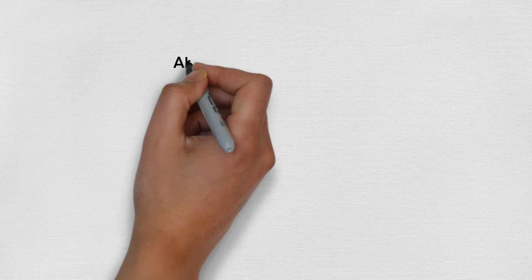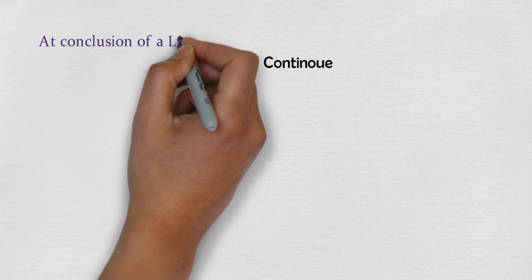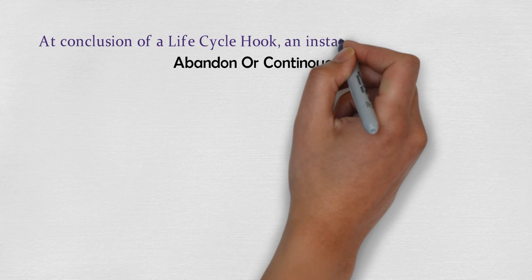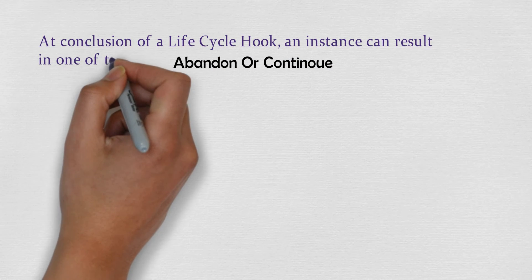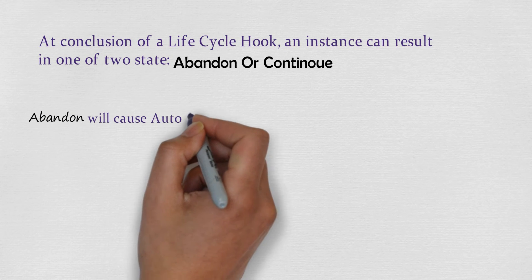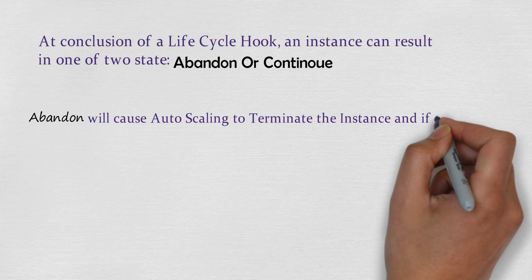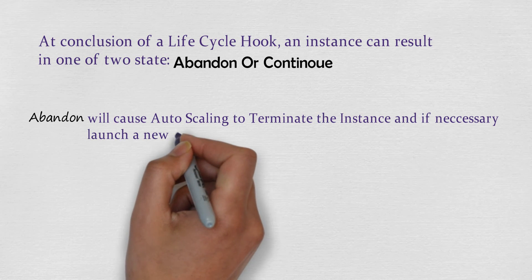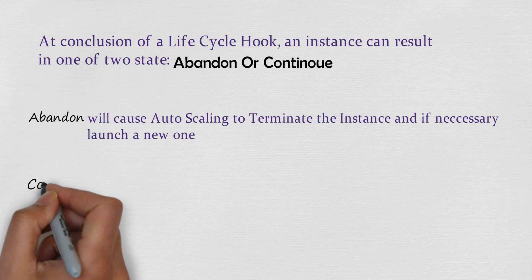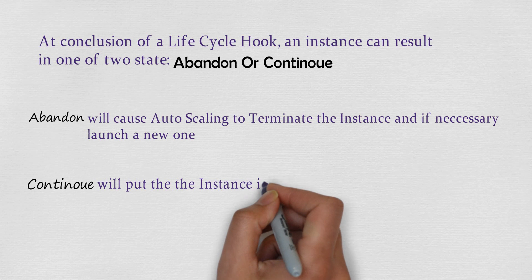Now let us see what is Abandon and Continue. At the conclusion of a lifecycle hook, an instance can result in one of two states: Abandon or Continue. Abandon will terminate the instance if necessary to launch a new one, and Continue will put the instance into service.